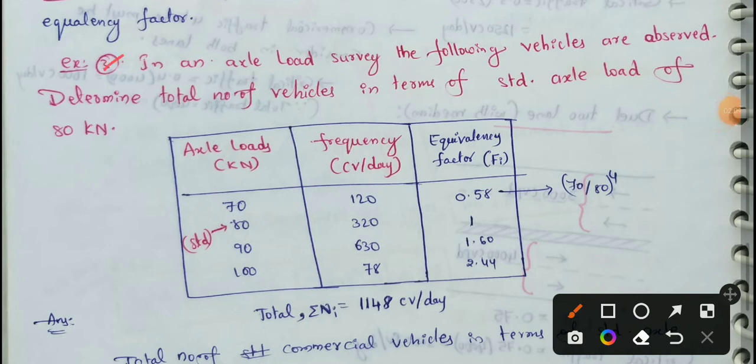In this problem, the following vehicles are observed. We need to determine the total number of vehicles in terms of standard axle load of 80 kN. The 80 kN standard axle load is the reference value.